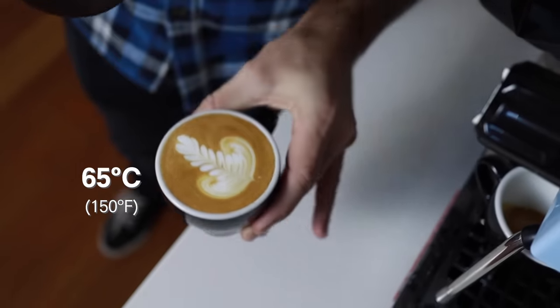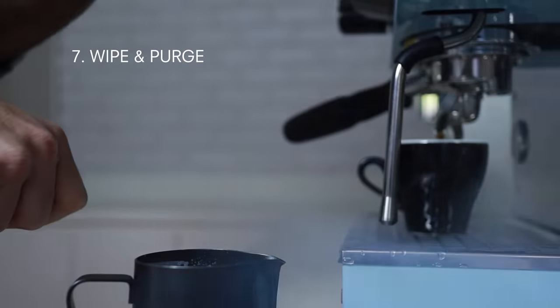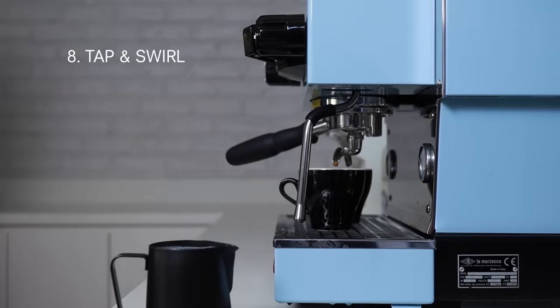Now before you get too excited about your creamy milk, it's time to wipe and purge that steamer every time. No excuses. Now we're going to give the jug a tap on the bench and a little swirl just to make that milk even creamier. Okay, now we're all ready to pour.